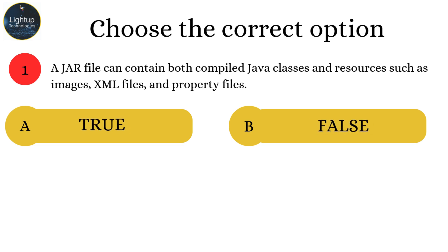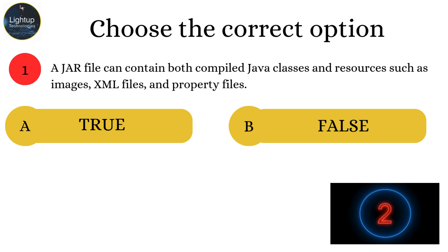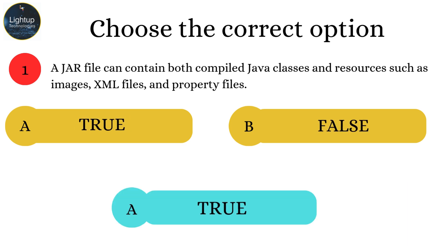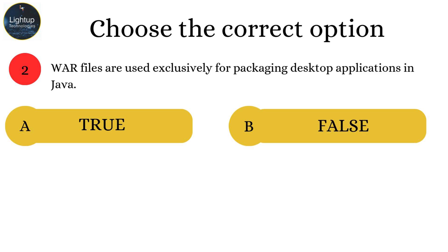A JAR file can contain both compiled Java classes and resources such as images, XML files, and property files. WAR files are used exclusively for packaging desktop applications in Java.